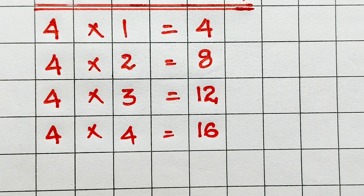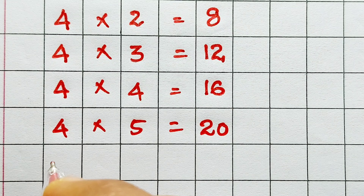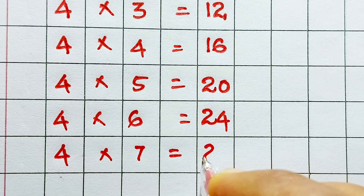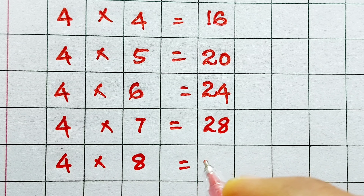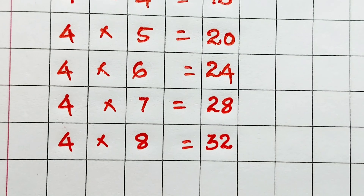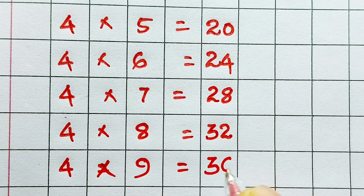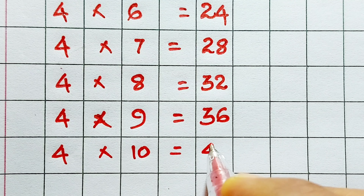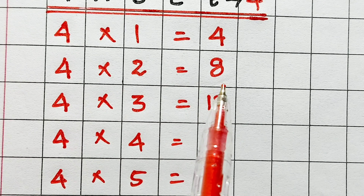...twelve. Four fours are sixteen, four fives are twenty, four sixes are twenty four, four sevens are twenty eight, four eights are thirty two, four nines are thirty six, four tens are forty.